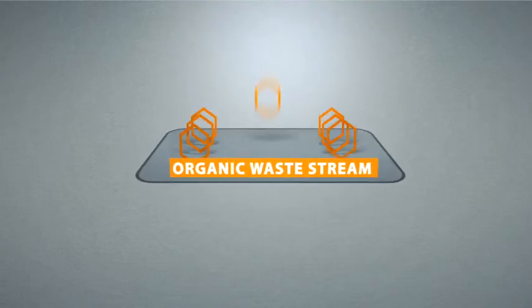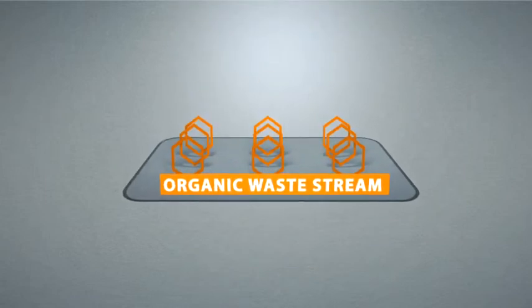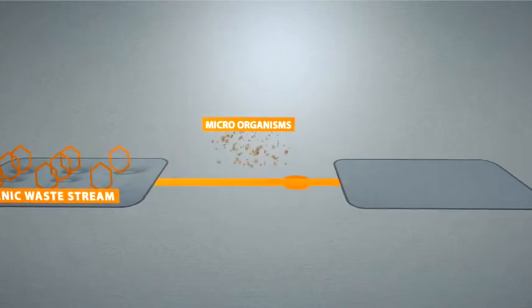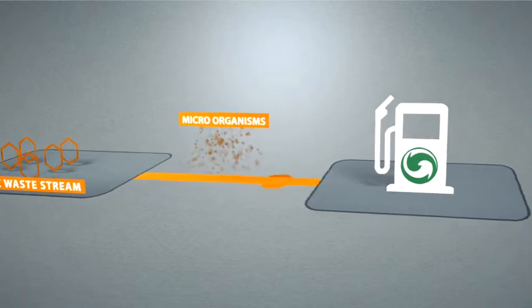If organic waste streams contain only one type of organic compound, such as simple sugar molecules, the right microorganisms can directly convert these simple sugars into biofuels such as ethanol.